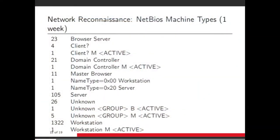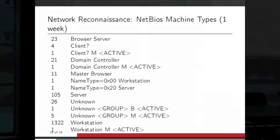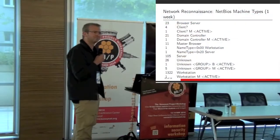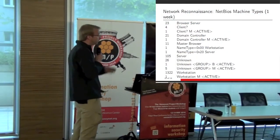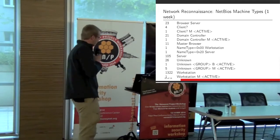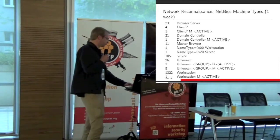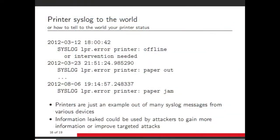Looking at NetBIOS machine types observed in one week: a lot of workstations for sure, but still a lot of servers. So a lot of servers still have misconfigured DNS. Some domain controllers, browser servers — not really good. If we reply back to those, it might be dangerous for the misconfigured machines.